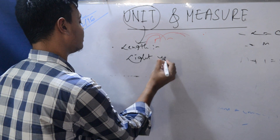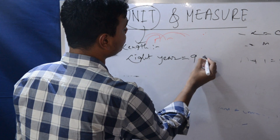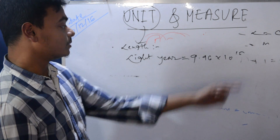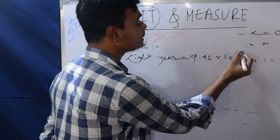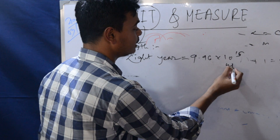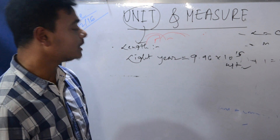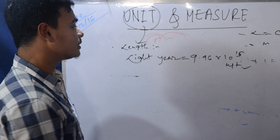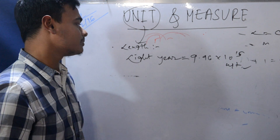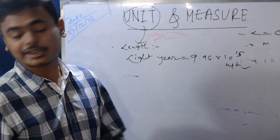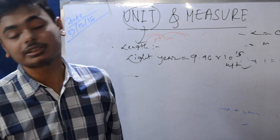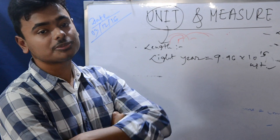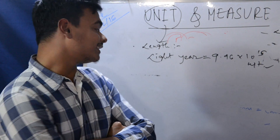This is a light year. Light year is equal to 9.46 into 10 to the power 15 meters. Light year is used to measure the distance between stellar objects — astronomical objects.